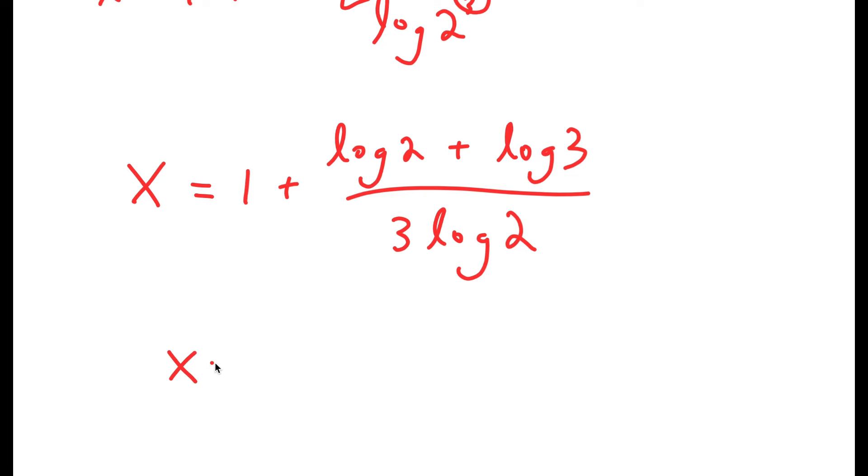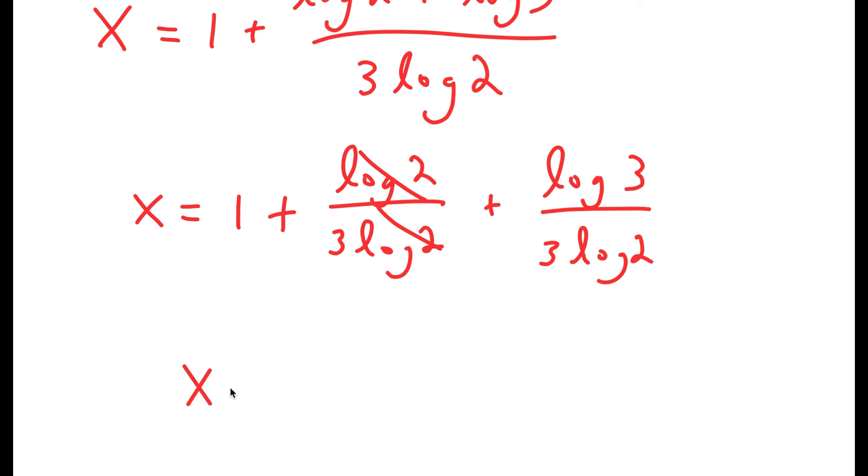Now again, I'm going to separate these using my fractional properties. So I get log 2 over 3 times log 2 plus log 3 over 3 times log 2. Now log 2 and log 2 cancel out. So I get x equals 1 plus 1 over 3 plus log 3 over 3 times log 2.